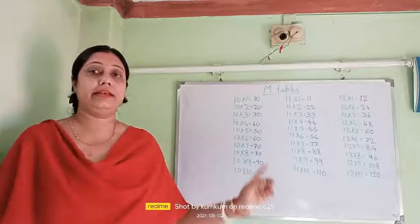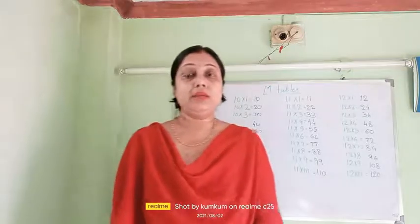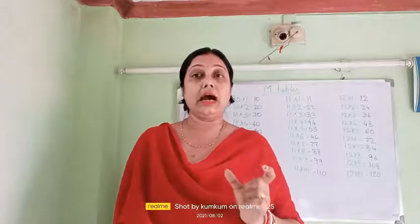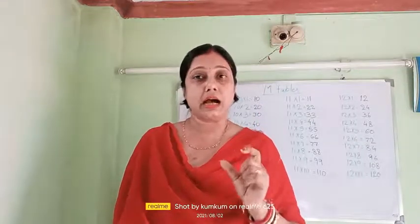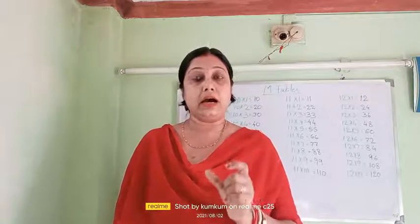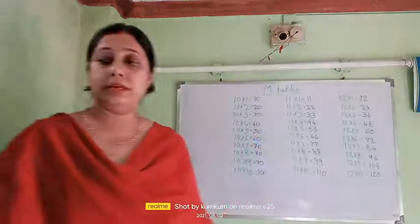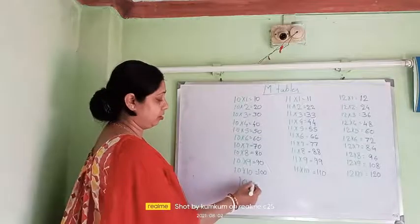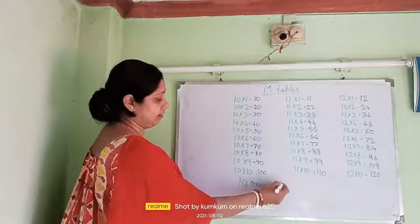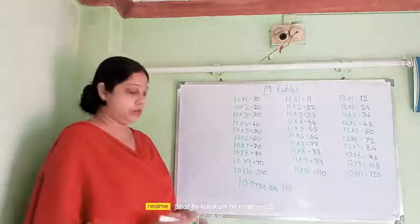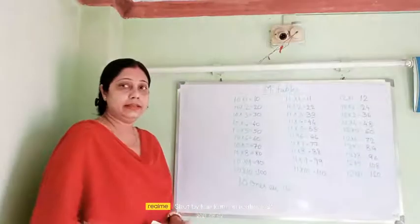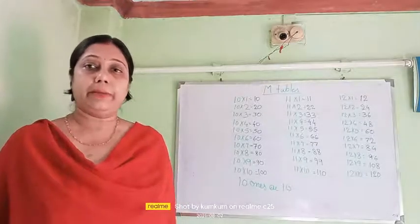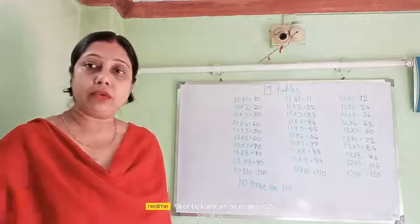The first table we will read is table 10. Now, 10 ones are 10. Whenever we are reading, 'are' is pronounced as 'the,' but actually it is 'are.' So, 10 ones are 10. Whenever we are writing, it should be like this.